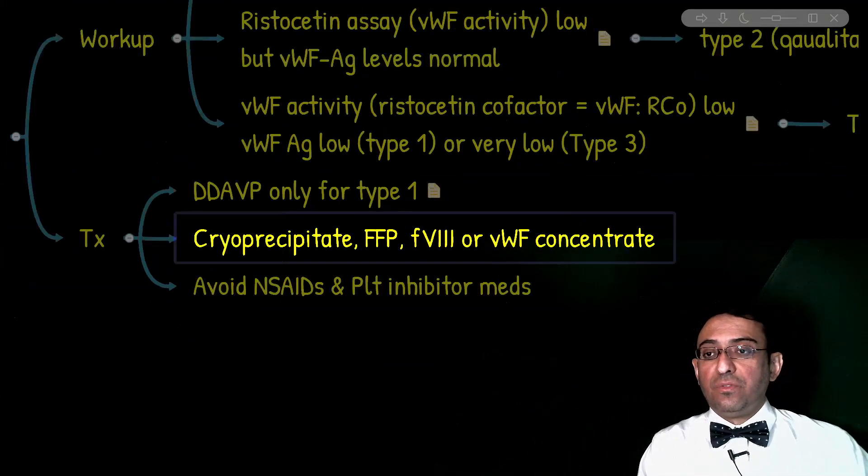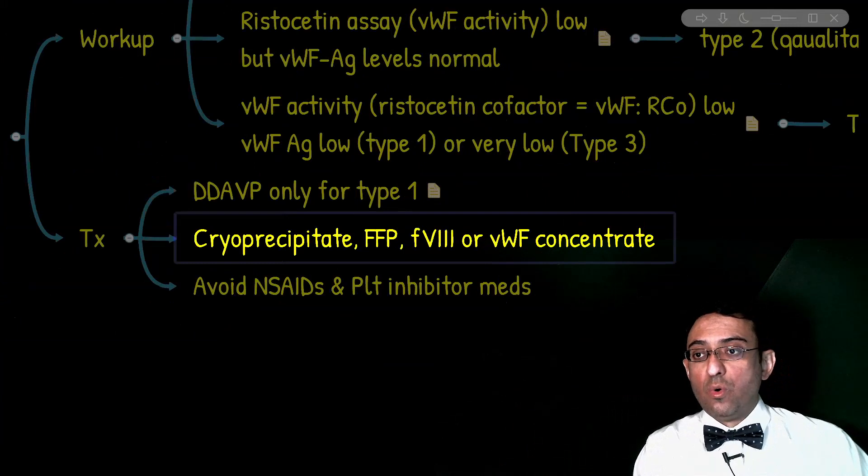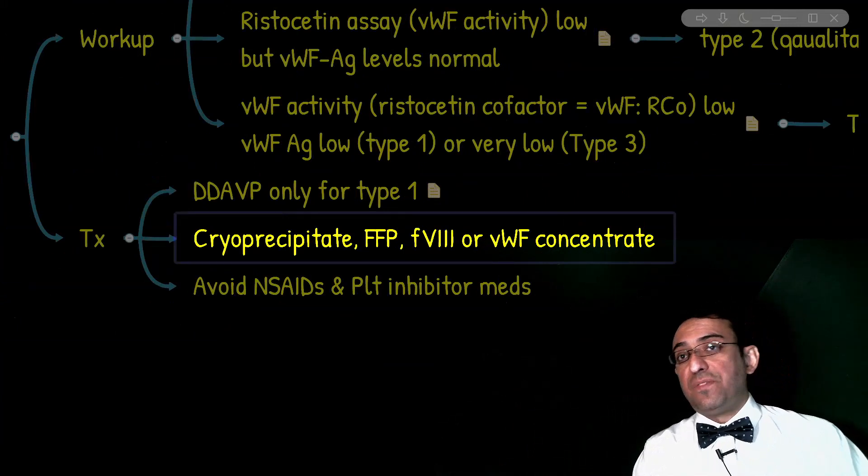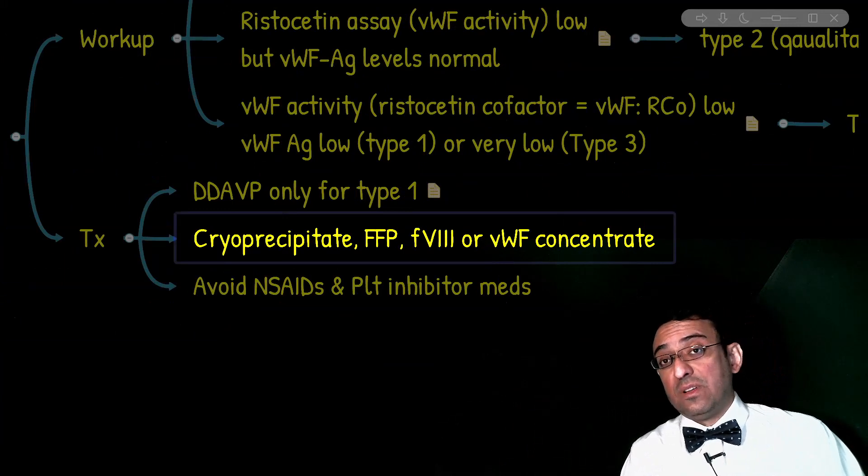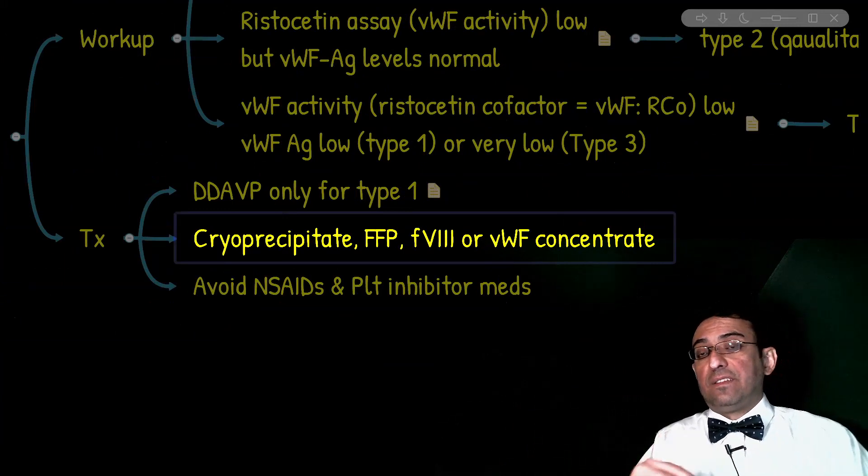So, what is the treatment for type II or type III? Remember, cryoprecipitate that has enough factor VIII, or we can provide fresh frozen plasma. Also, factor VIII or von Willebrand factor itself, including factor VIII concentrate or recombinant von Willebrand factor.